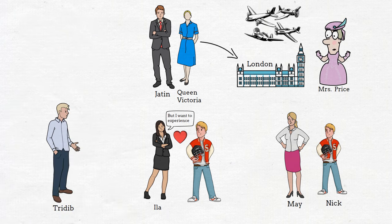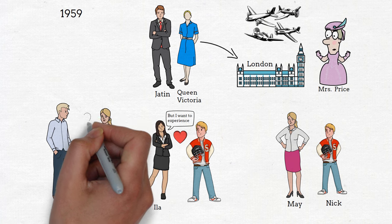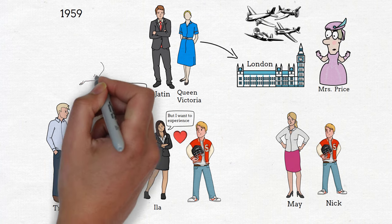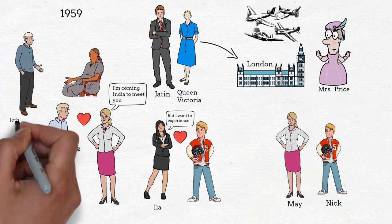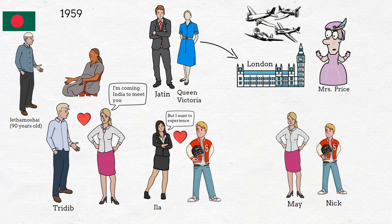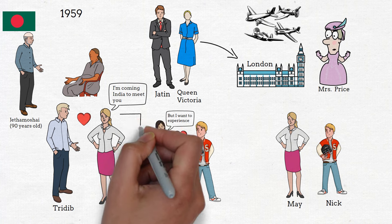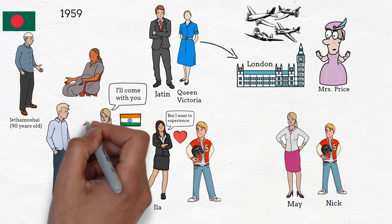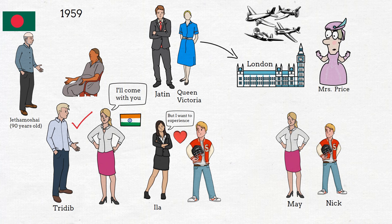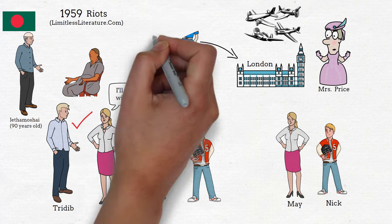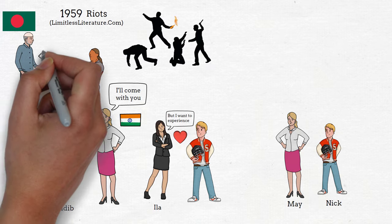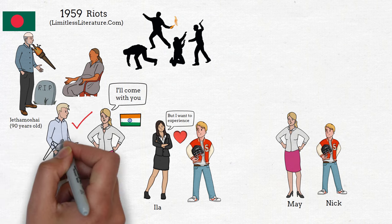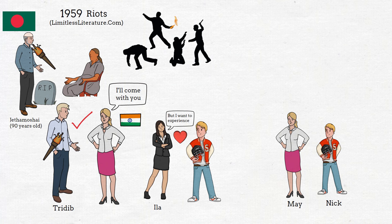On the other hand, we reach the year 1959, where Tridib also gets into a sort of love affair with May. May tells him she is coming to India to meet him. Moving forward, Thama learns that her uncle Jeth Moshai is around 90 years old and still alive. So Thama decides to take her uncle back from Dhaka to India. May, who is now in India, decides to go with Thama, and Tridib also joins them. The three of them reach Dhaka to bring her uncle back, but suddenly riots begin to happen in Dhaka. Things get worse, and Jeth Moshai dies in those riots. The shock comes when Tridib also dies in the riots.